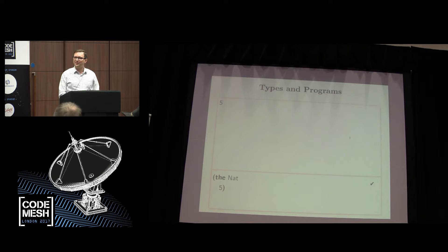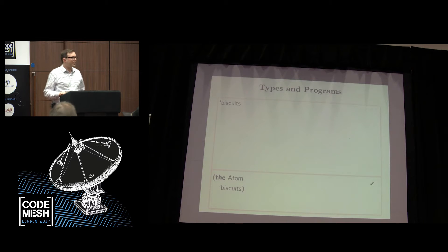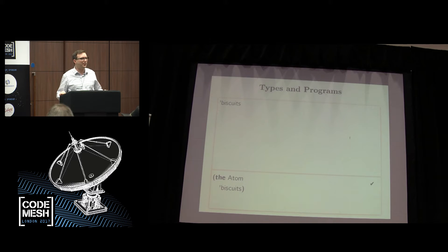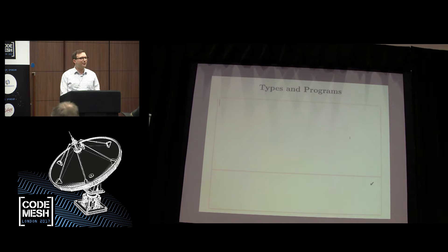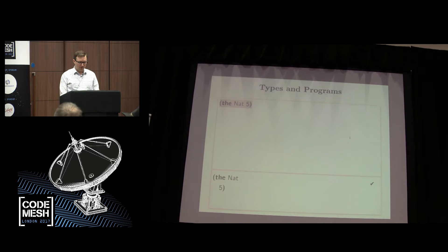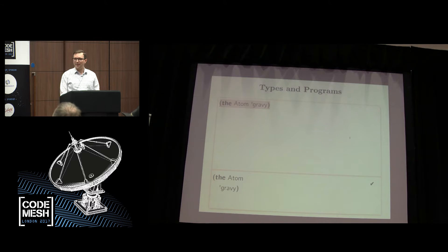But we have other programs than just five. We can also write programs like 'biscuits', which is a kind of program called an atom — old-fashioned Lisp lingo for what we call symbols today. And the syntax it's putting out, where it says what kind of thing my program and its result were, I can use that myself. So I can say 'the nat five', or I can say 'the atom gravy', and we get back the same answer. If I were to say 'the atom five', we've got a problem: it expected an atom but it got a nat.